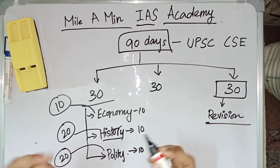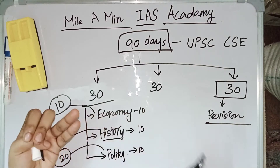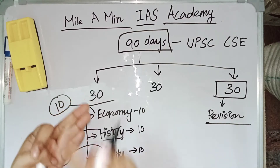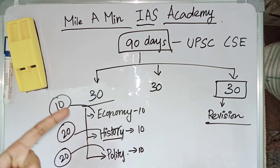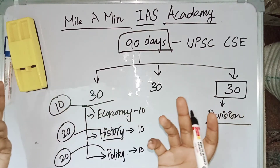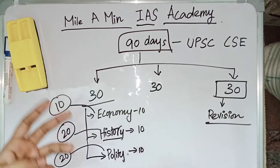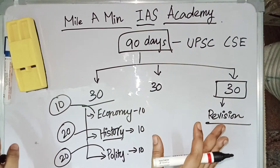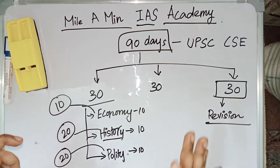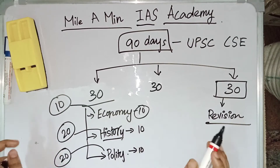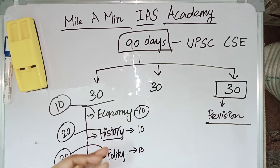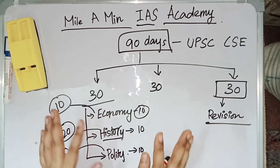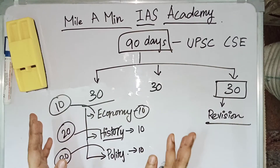Within these 10 days we should focus on the syllabus, focus on the previous year question papers, have revision tests in these subjects, and complete the syllabus. The material — you might be following some books or you may have some written materials — you can follow anything you want. But we should complete the syllabus within the 10 days, starting with economy.